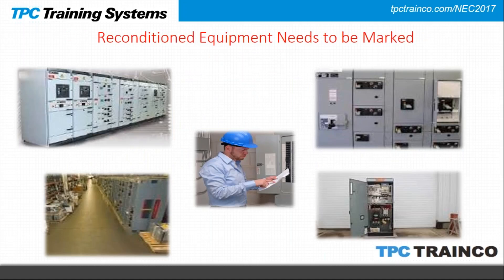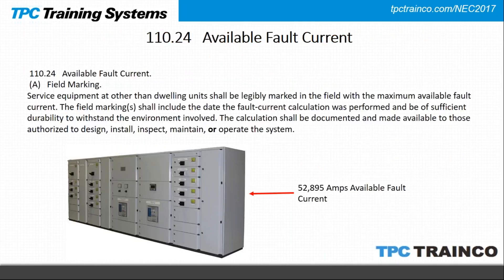Section 110.24 deals with available fault current at service equipment, other than dwelling units. They added the word 'or' — if equipment is installed, refurbished, or modified, the available fault current must be marked on the service equipment. The calculations shall be documented and made available to those who design, install, inspect, maintain, or operate the system. Available fault current is critical — whether we're trying to eliminate arc flash hazards or coordinate a system, we have to know that value.